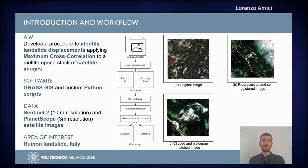The aim of this work was to develop a procedure able to identify landslide displacements by applying the maximum cross-correlation method to a multi-temporal stack of satellite images. The images came from the Sentinel-2 and the PlanetScope missions, and the software is completely open source, composed of QGIS in combination with custom Python scripts.